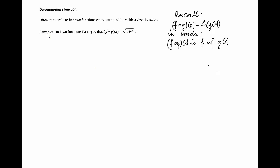So if I call my function h(x), then h(x) is the square root of x plus 4. What I am to do here is to find two functions f and g such that h(x) is the composition of f circle g.